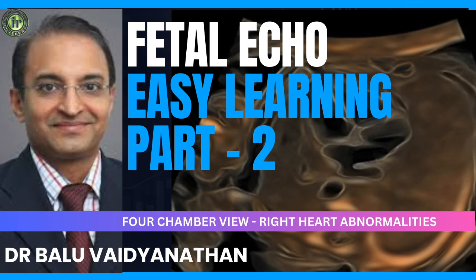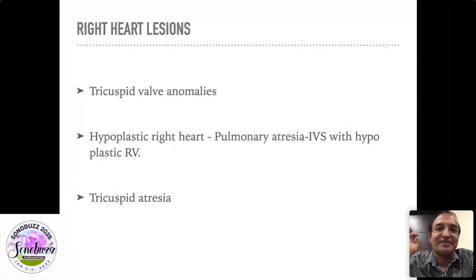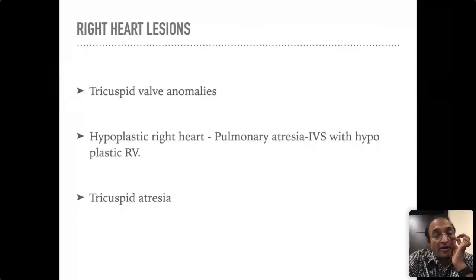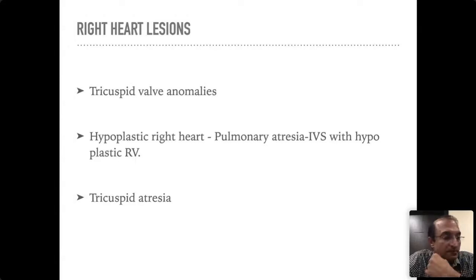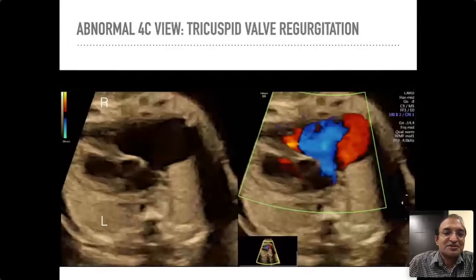Now we move on to the second set of problems of the four chamber view, which is the right heart lesions. I'll talk about tricuspid anomalies, then pulmonary atresia with intact septum — sometimes called hypoplastic right heart — and then tricuspid atresia. I suggest that you pay attention to this group of conditions because you may have a surprise later on.